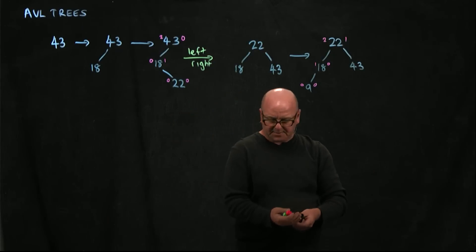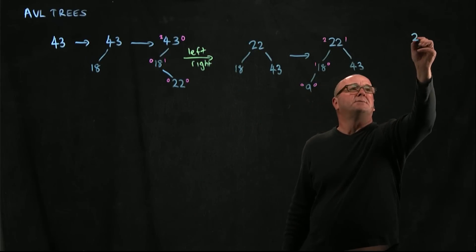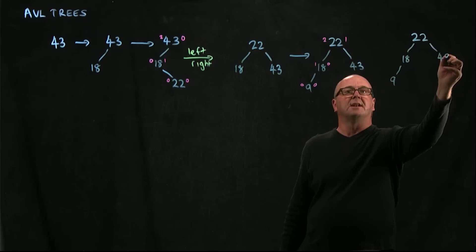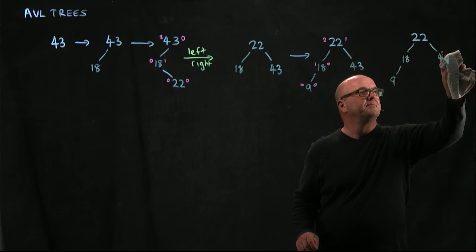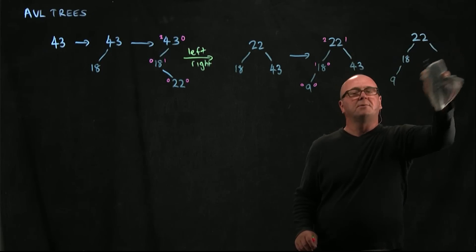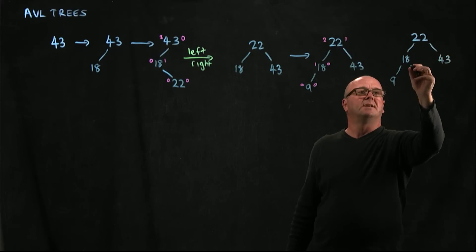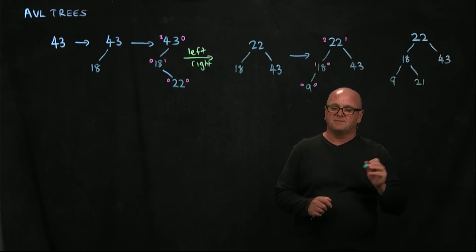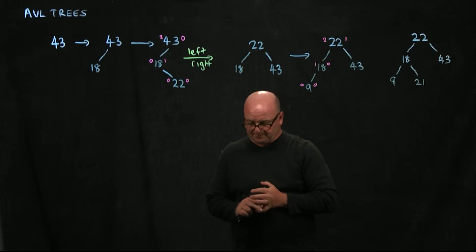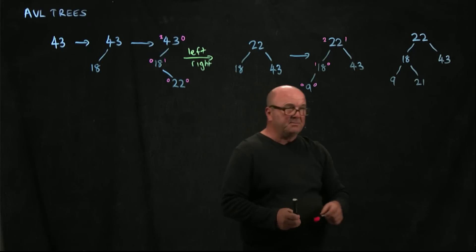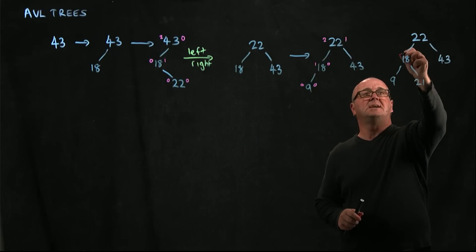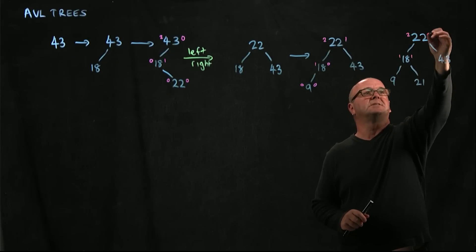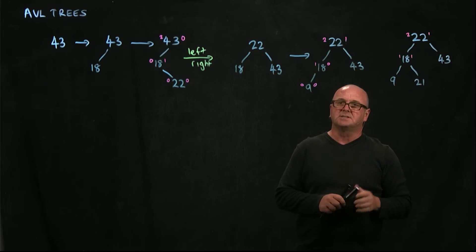Now we add a 21. 21 is less than 22 so it goes on the left, and 21 is more than 18 so it goes on the right child of 18. Is this tree balanced? Our 18 has 1 node on either side. Our 22's longest path is still 2, and 1 on the right. So it's still balanced.